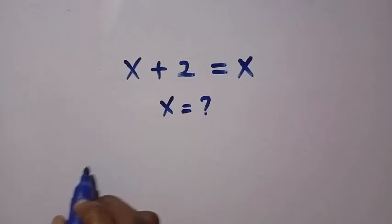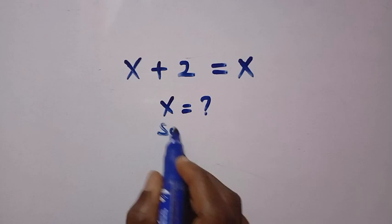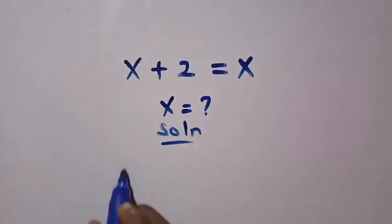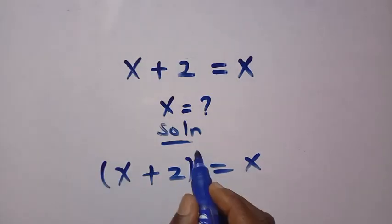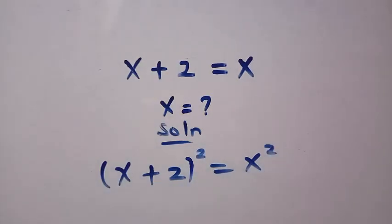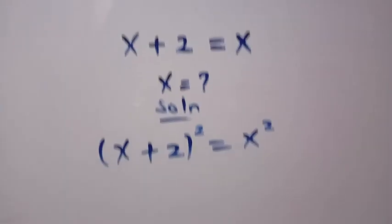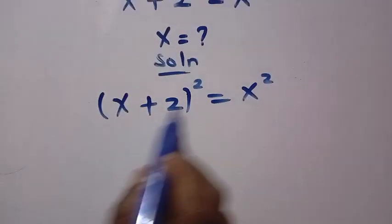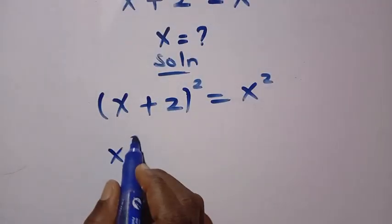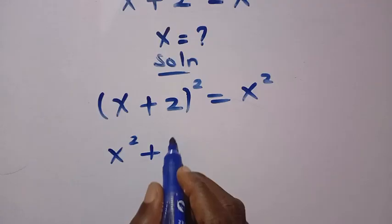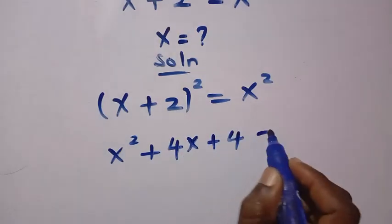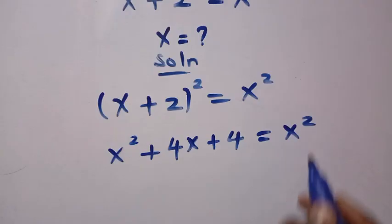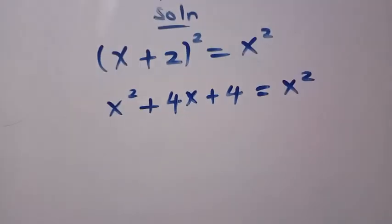On the algebraic method of solving this, let's say we have solution from here. We are given x plus 2 equals x. Let's say we take the square of both sides. And by expanding x plus 2 squared, we are going to have this as x squared plus 4x plus 4 equals x squared.